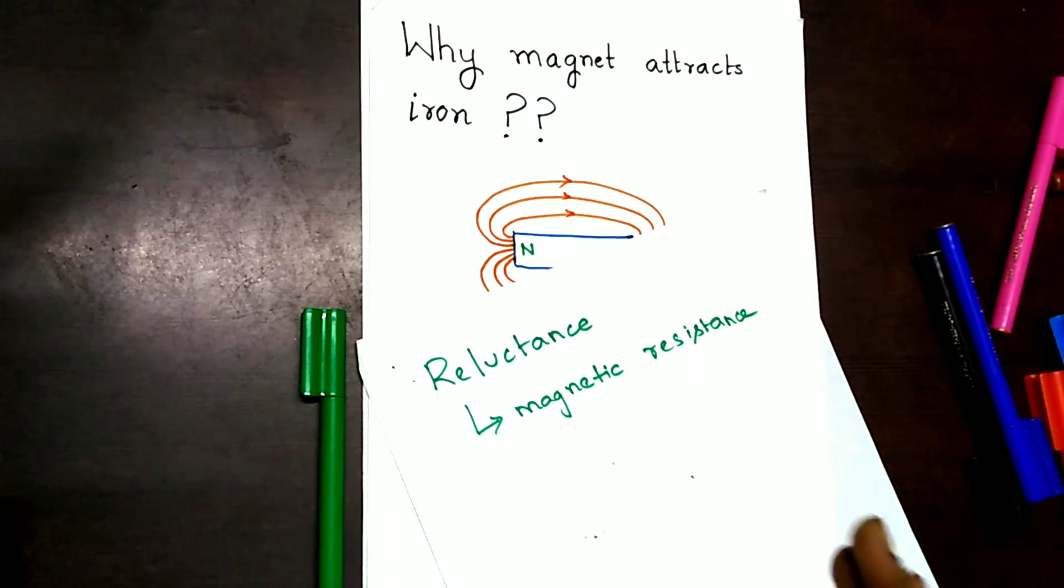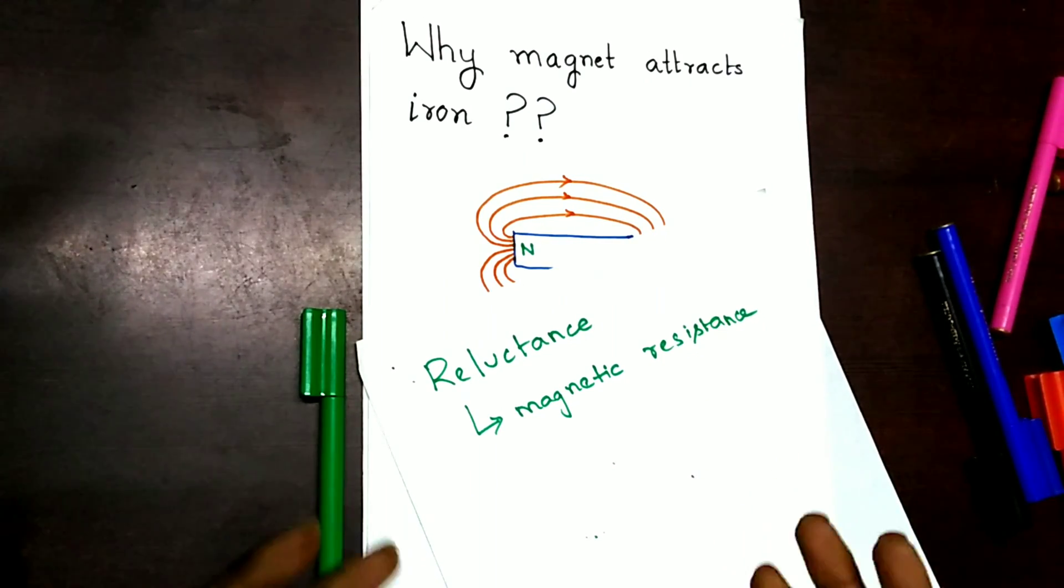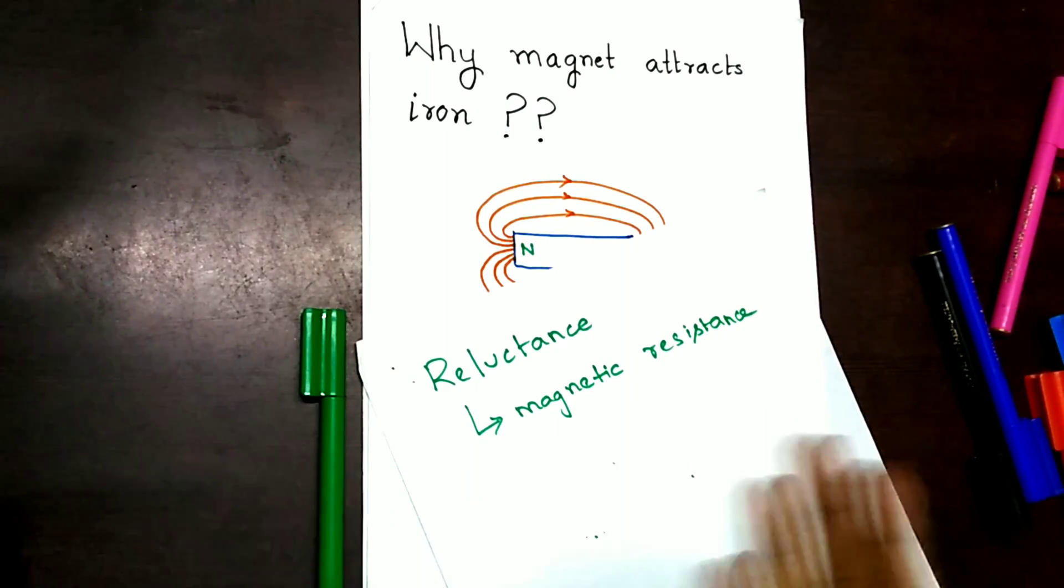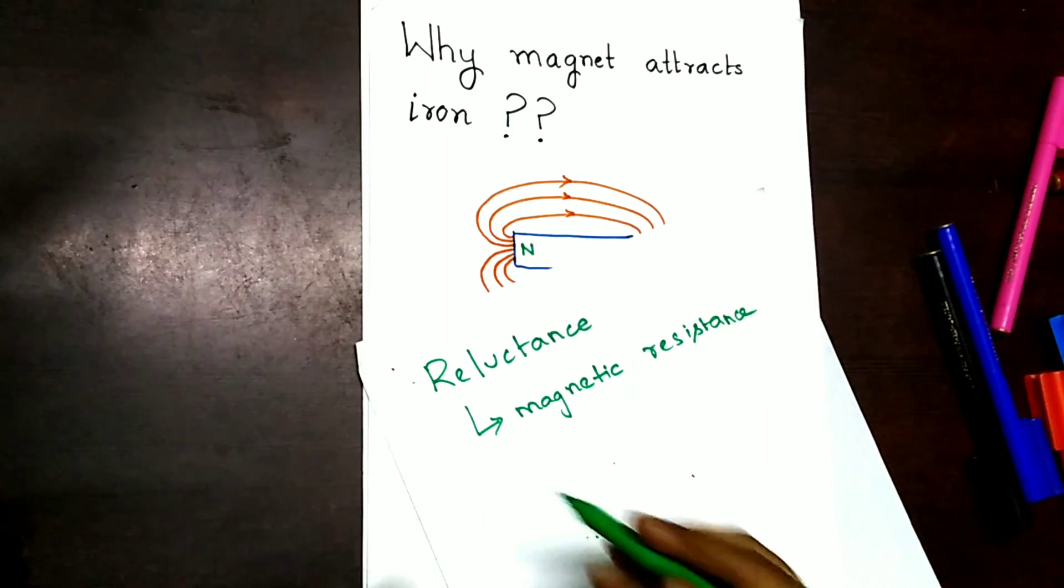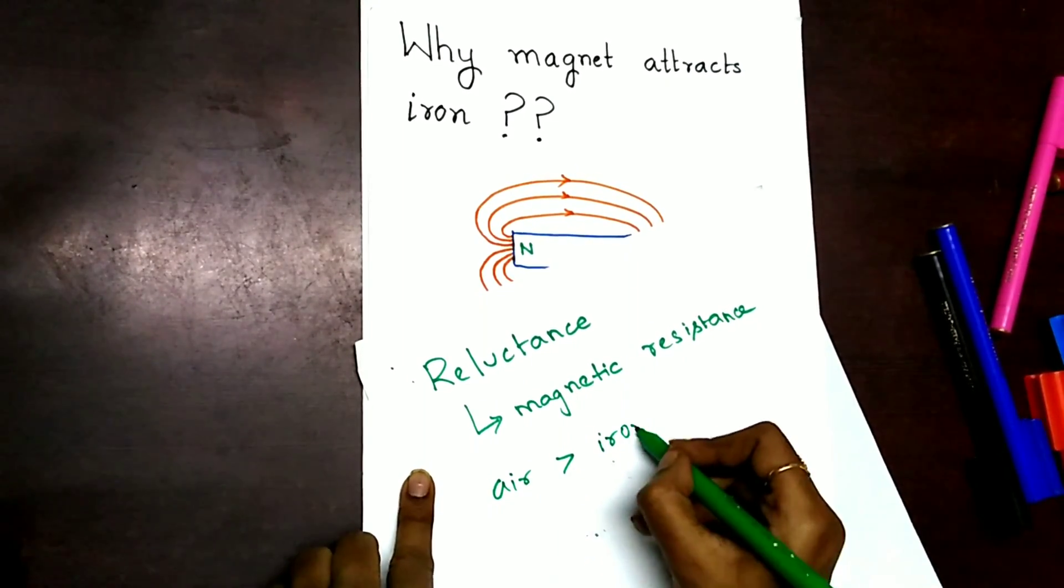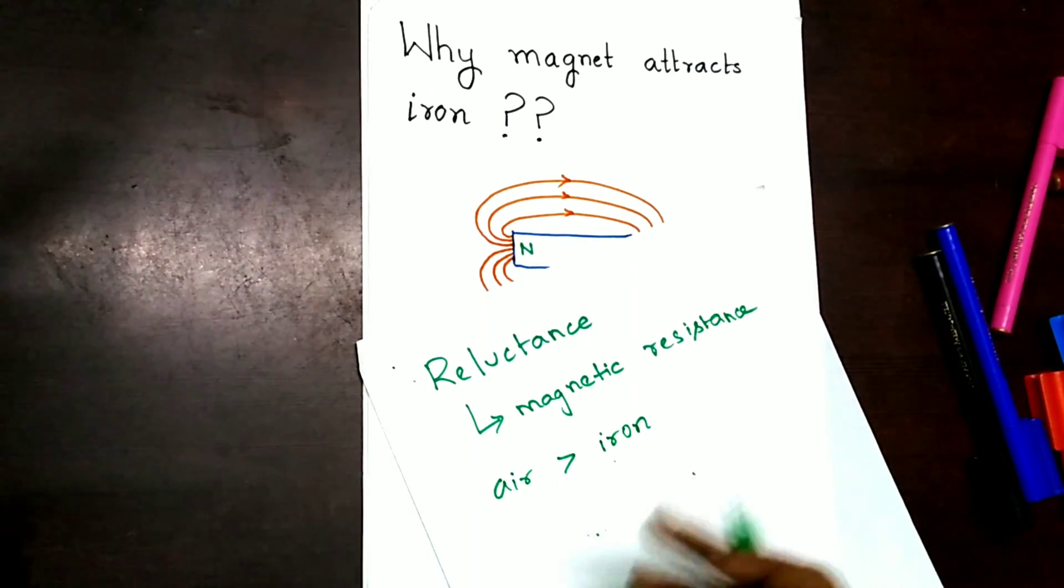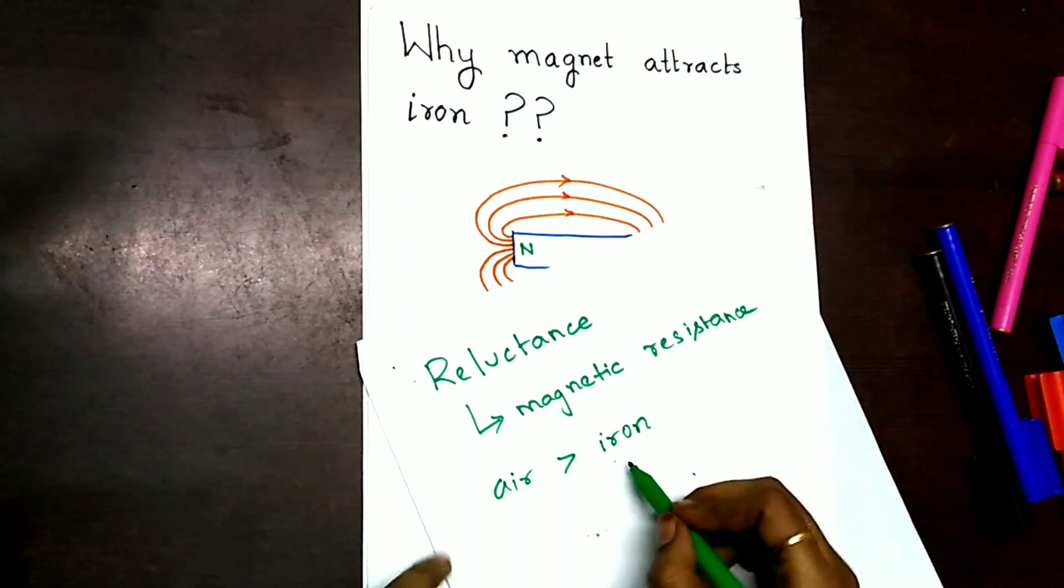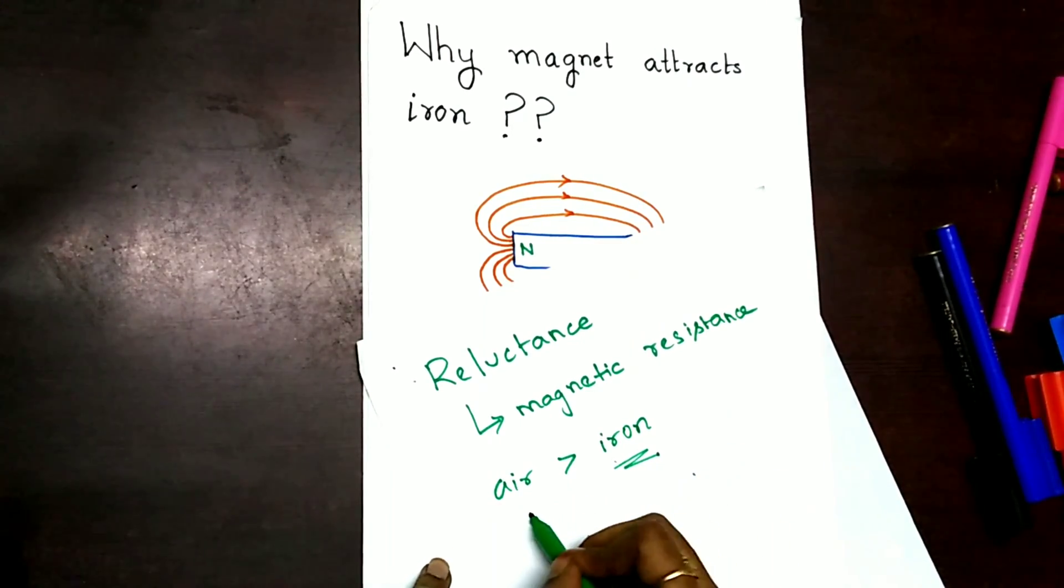Since this reluctance is a property of a magnetic material, it varies from one material to the other. The reluctance of air is more than the reluctance of iron. That is, it is easier to develop a flux in iron than that in the air.